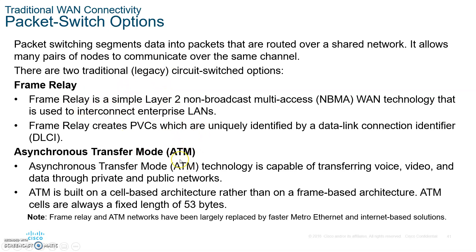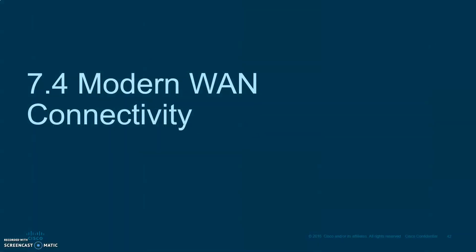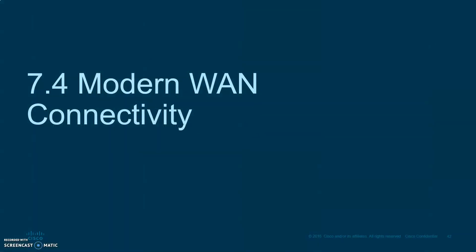ATM was big in the early 1990s. Instead of frames, ATM used 53-byte cells — much smaller than the 1,518-byte Ethernet frames. Because of these small cells, data could move very fast, and ATM was popular for voice and video due to near-zero delay. It was a metropolitan area network protocol.